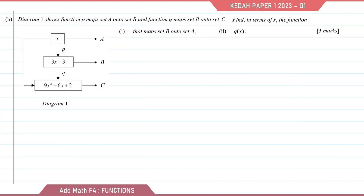Question B. Diagram 1 shows function p maps set A onto set B and function q maps set B onto set C. Based on the arrow diagram given, we know that function p is equal to 3x minus 3. The function that maps set A to set C is the composite function. To write the name of the composite function, we start with the second function then followed by the first, so the name will be qp.